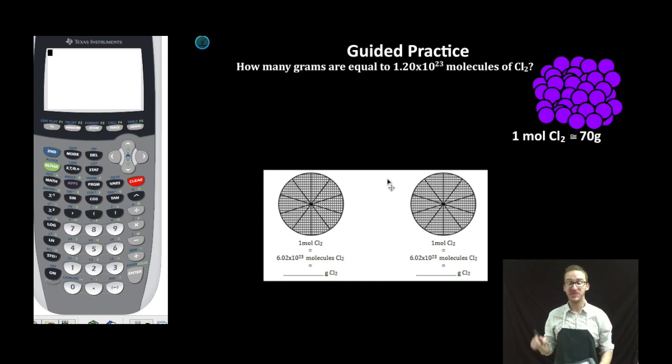It's a doozy. It's going to be a diatomic element. In this case, we're going to use chlorine. Here's my model to represent one mole of chlorine. Molar mass, approximately 70 grams.